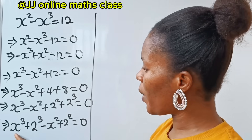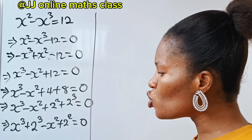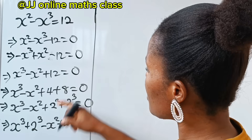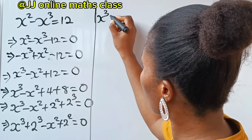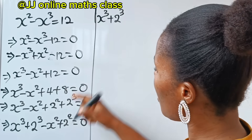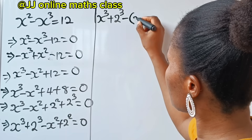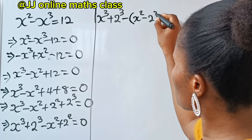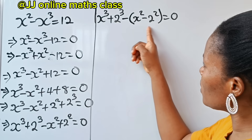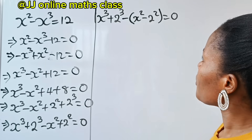We have x to the power of 3 plus 2 to the power of 3. If we write this minus and open brackets, this is the same thing as minus bracket x squared minus 2 squared, is equal to 0. Because if I open this bracket, I'll still get this back.